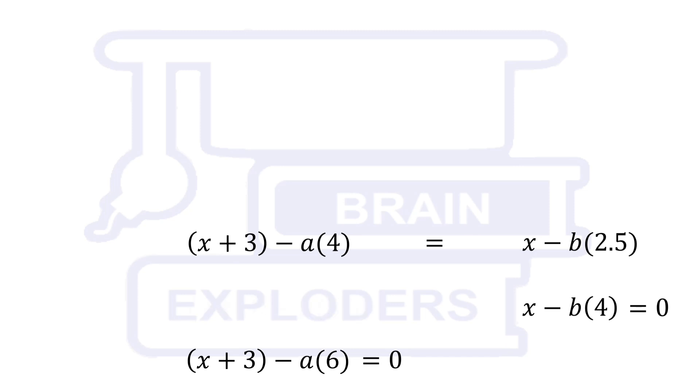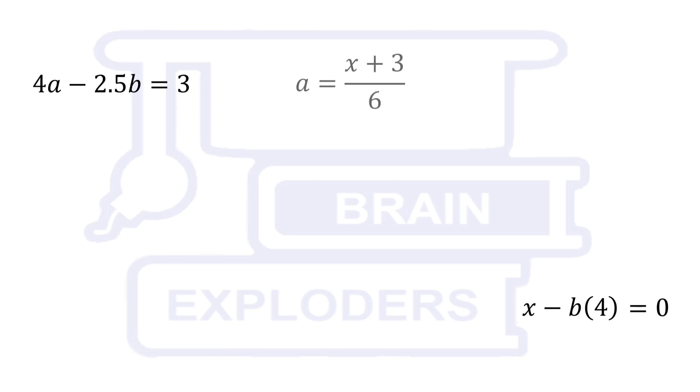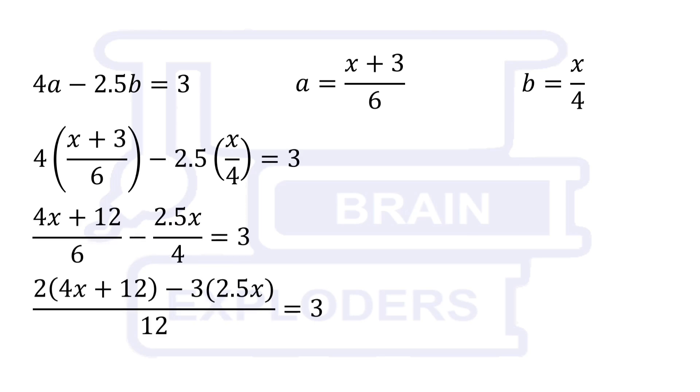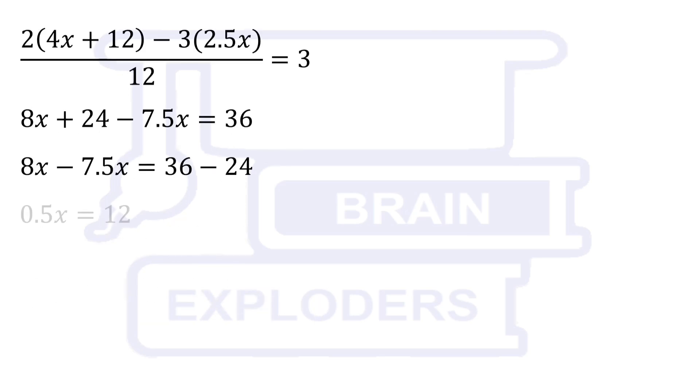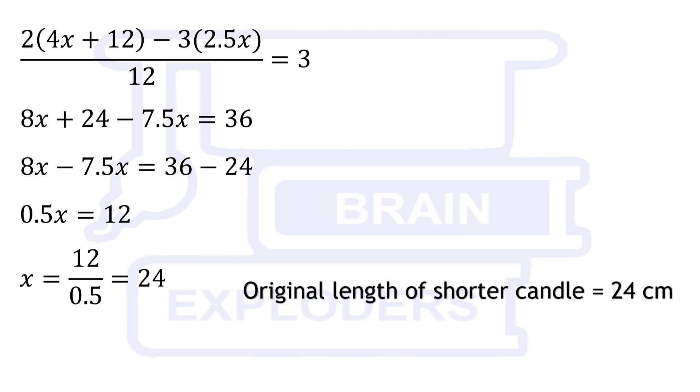Now, from these equations, calculate the values of a and b in terms of x and put in the third equation. We get x equals to 24 cm. Therefore, original lengths of longer and shorter candle were 27 cm and 24 cm respectively.